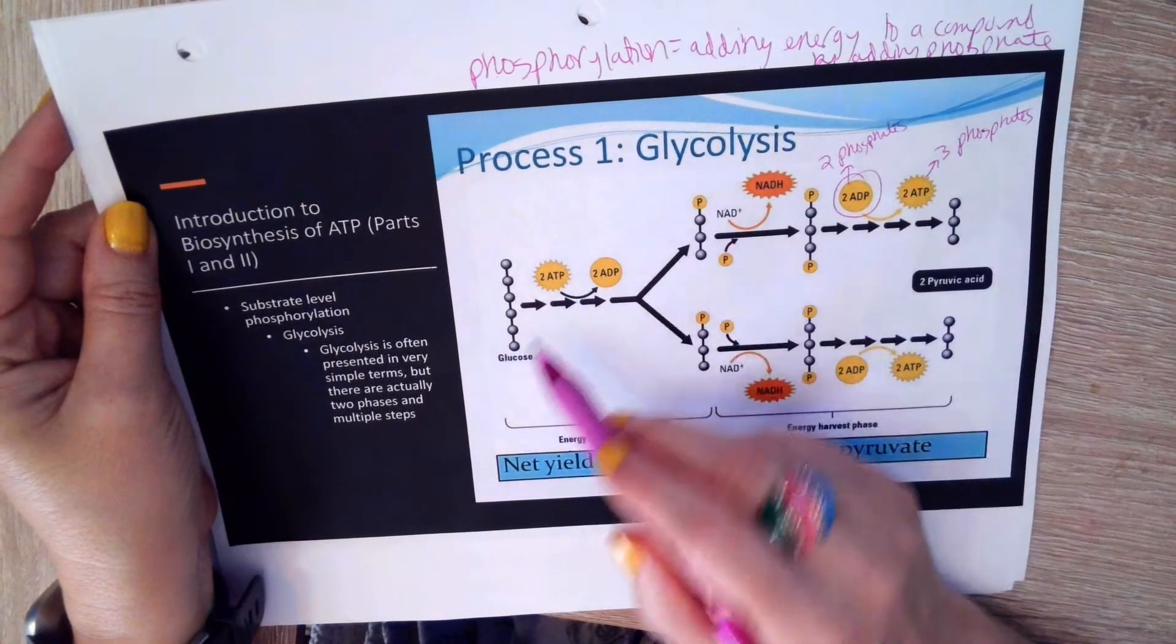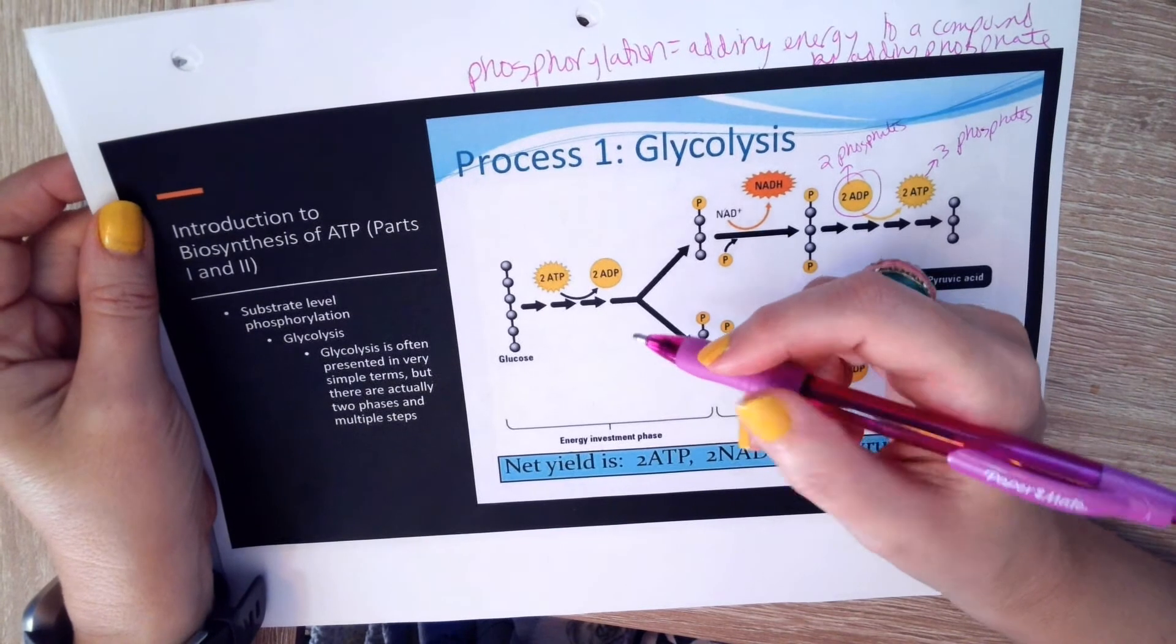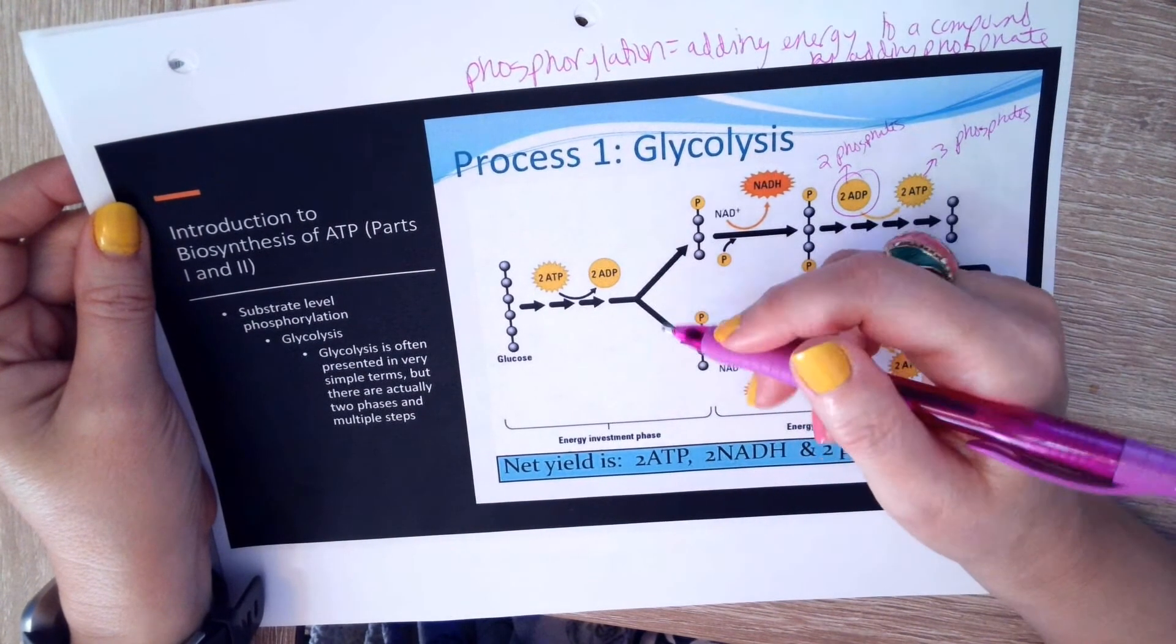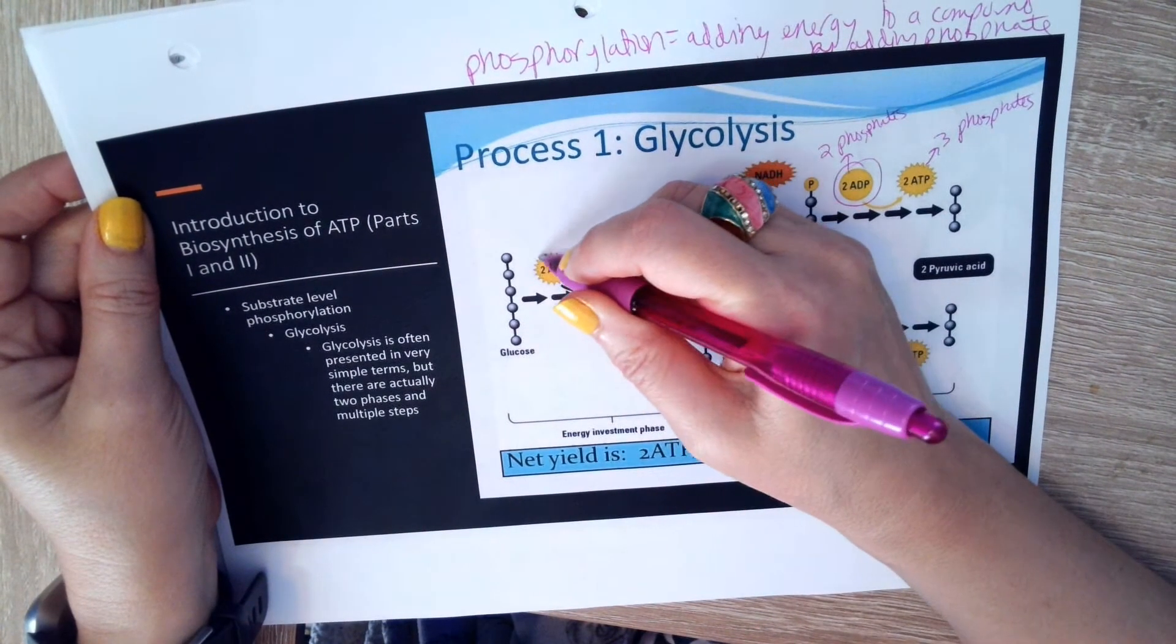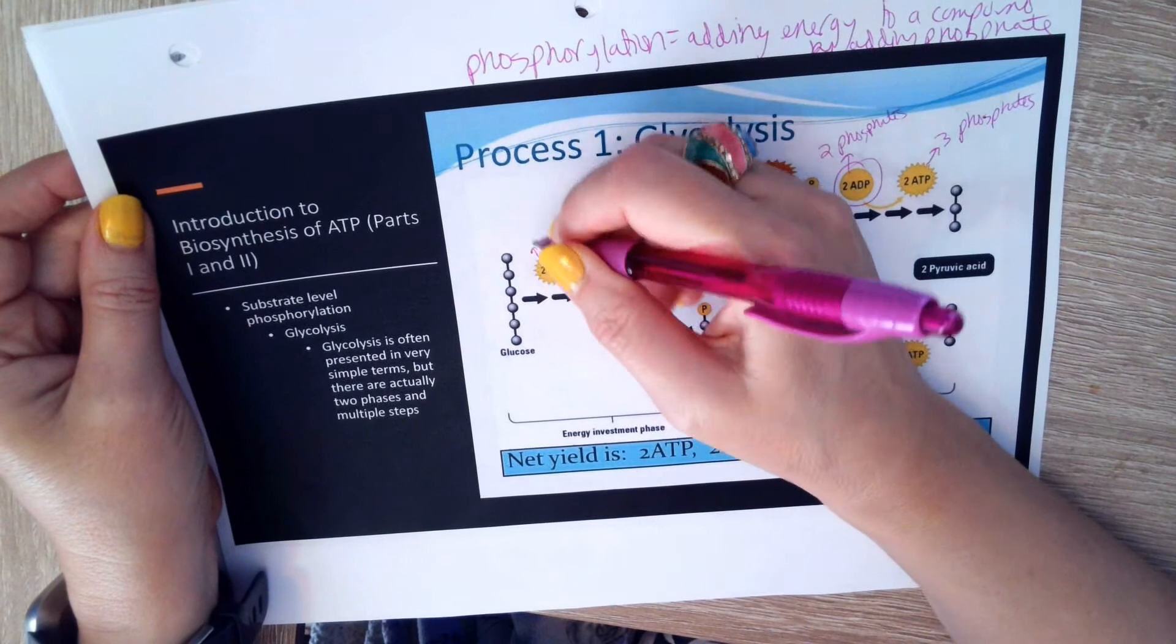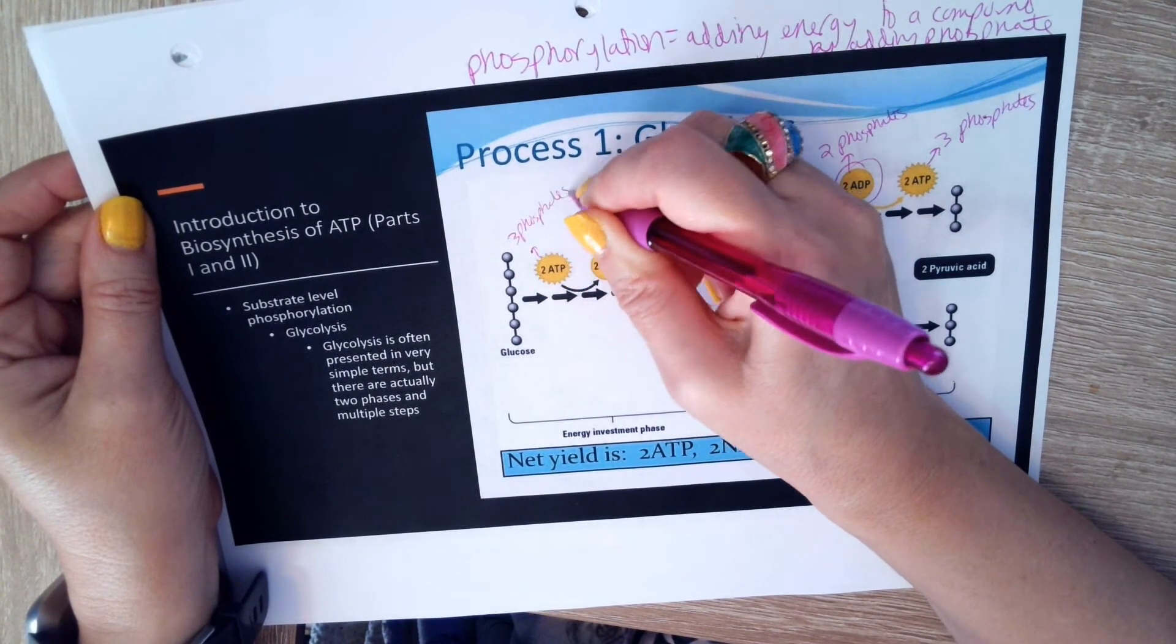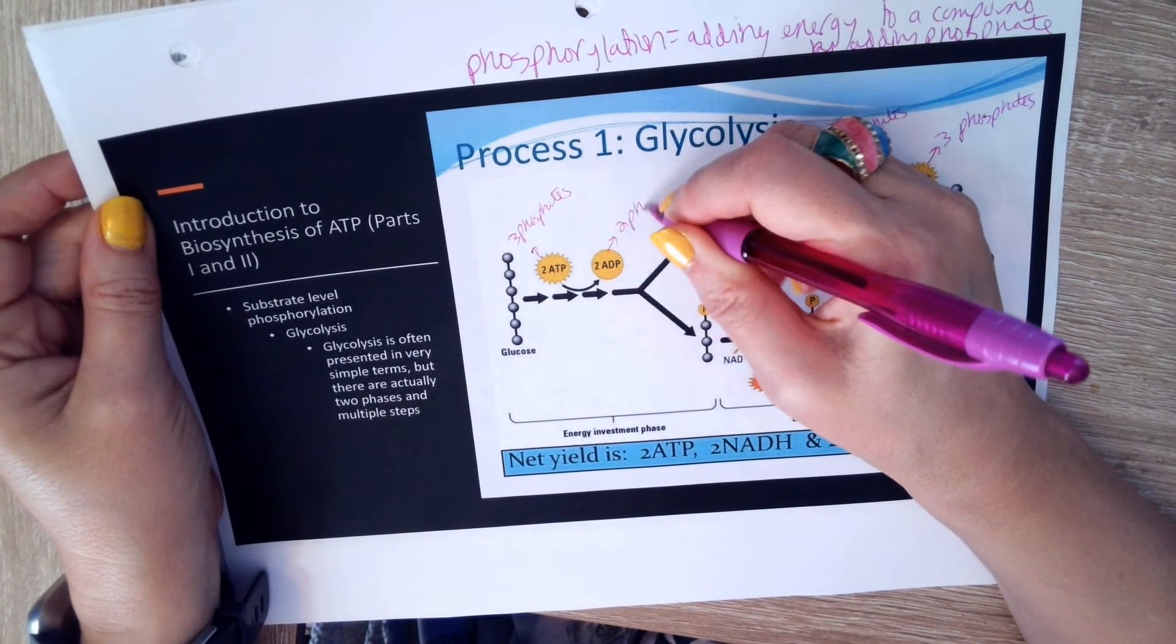Now in the beginning of glycolysis, also remember we used up some ATP. We use some energy to start our glycolysis process, so there we are breaking it down. So here we have our ATP we're breaking. We have our three phosphates. You take a phosphate away and turn it into ADP, which only has two phosphates.